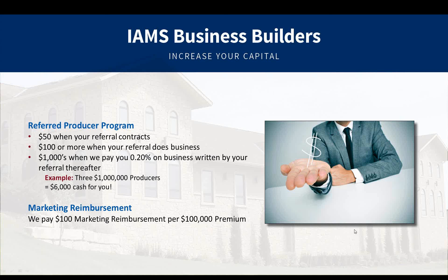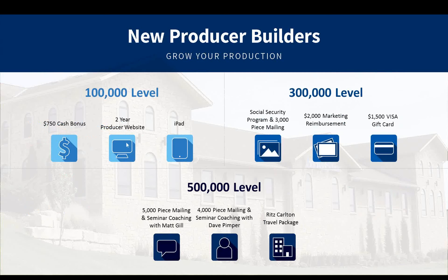We also do marketing reimbursements. When you write business with us — $100,000 in premium for single premium life or annuities, or $10,000 in target premium — that generates a $100 check into a reimbursement account you can use as you please. We reimburse you up to 50% of your marketing expenses. Send us a receipt for $500 and we'll send you a check for $250, assuming you have that in your account.